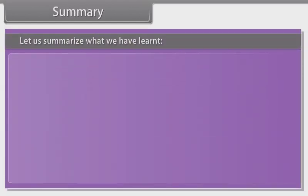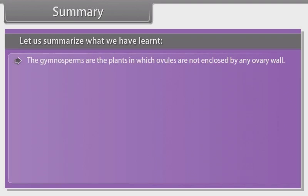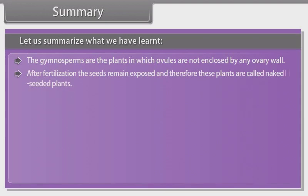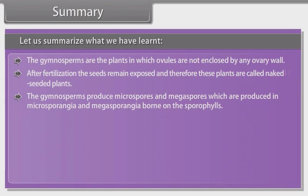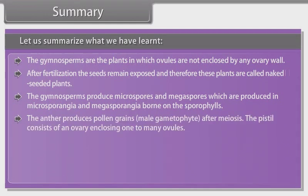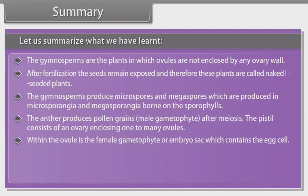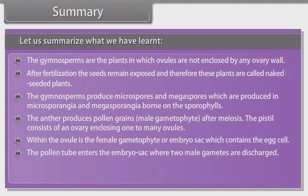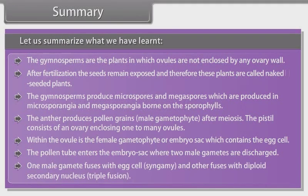Let us summarize what we have learned. The gymnosperms are the plants in which ovules are not enclosed by any ovary wall. After fertilization the seeds remain exposed and therefore these plants are called naked seeded plants. The gymnosperms produce microspores and megaspores which are produced in microsporangia and megasporangia borne on sporophylls. The anther produces pollen grains, male gametophyte, after meiosis. The pistil consists of an ovary enclosing one to many ovules. Within the ovule is the female gametophyte or embryo sac which contains the egg cell. The pollen tube enters the embryo sac where two male gametes are discharged. One male gamete fuses with egg cell and other fuses with diploid secondary nucleus, triple fusion.